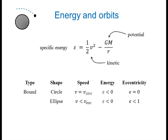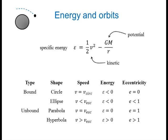Eccentricity is a measure of how elongated the ellipse is. Then there are unbound orbits, including parabolic orbits and hyperbolic orbits. A parabolic orbit occurs when your speed is exactly equal to the escape speed — your total energy, kinetic plus potential, is just zero, which is barely enough to escape to a very great distance. The eccentricity of a parabolic orbit is one. For hyperbolic orbits, your speed is bigger than the escape speed, total energy is positive, and eccentricity is greater than one.